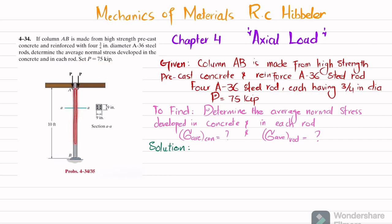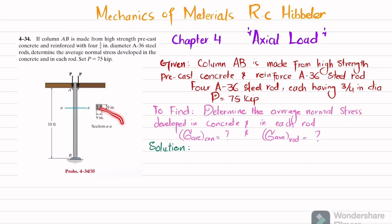You can see this is column AB. The cross-section of the column is given as 9 inches by 9 inches, and there are four steel rods in that. So you have to find the average stress in the concrete as well as the average normal stress in each steel rod.